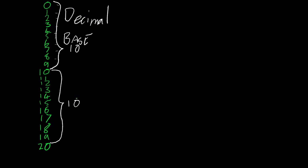But there are other numbering systems out there. Let's say we start with zero, then go one, two, three, four, five, six, seven, eight, nine. But now, instead of ticking over, we're going to borrow some letters and do a few more: A, B, C, D, E, F — and now we tick over and start again.